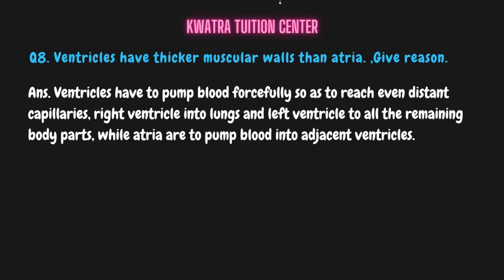Question number eight: ventricles have thicker muscular walls than atria — give reason. Ventricles have to forcefully pump blood out to distant capillaries — the right ventricle to the lungs and the left ventricle to all remaining body parts. Atria, on the other hand, only need to pump blood into the adjacent ventricles. Since ventricles must pump blood to distant parts, their muscular walls are much thicker compared to the atria.